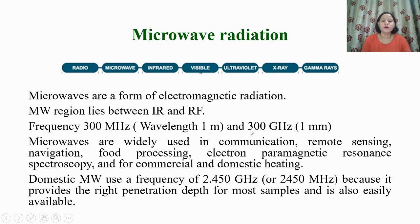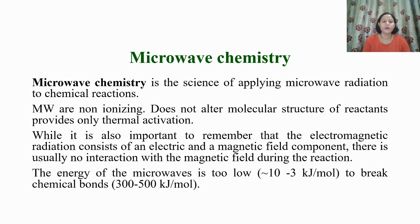The frequency range is 300 megahertz to 300 gigahertz and wavelength is 1 meter to 1 millimeter. They are widely used in communication, remote sensing, navigation, food processing, electron paramagnetic resonance spectroscopy, and for commercial and domestic heating. The domestic microwave uses a frequency of 2.45 gigahertz, which provides the right penetration depth for most samples and is easily available. Now let us understand microwave chemistry.